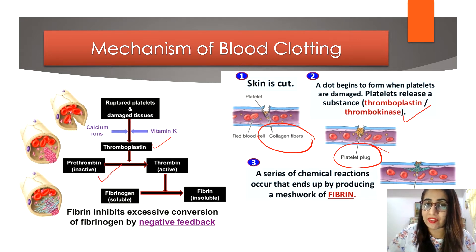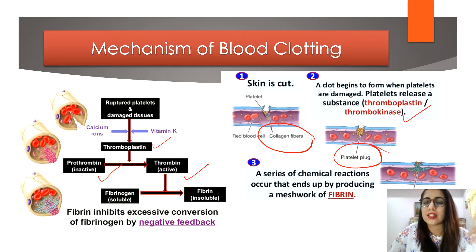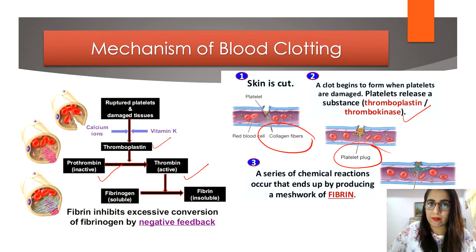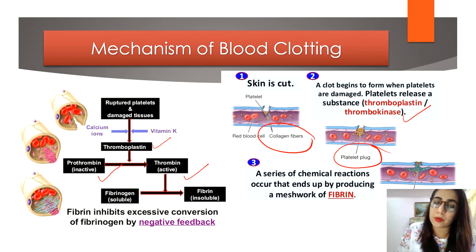Prothrombin is normally inactive — just present in the plasma with no issues. But when blood clotting needs to start, thrombin is activated through thromboplastin with the help of calcium ions and vitamin K. This all happens in the plasma. Thrombin is an active enzyme which catalyzes the next conversion.